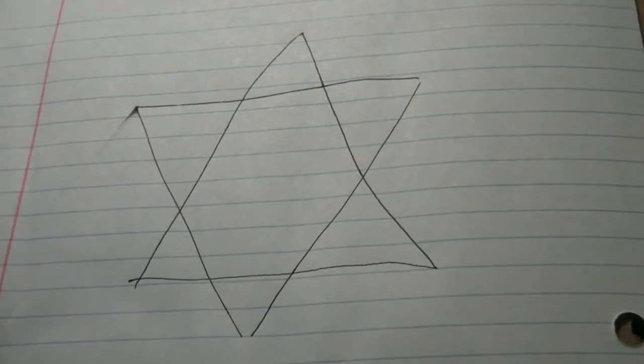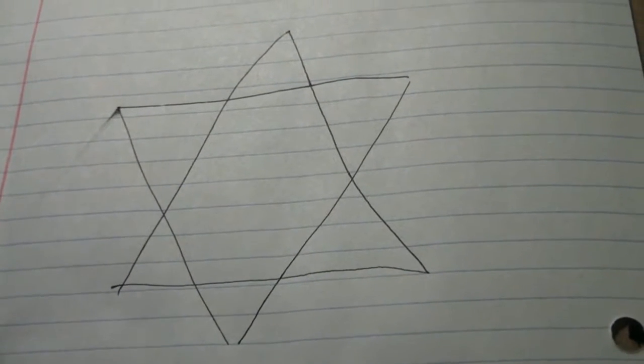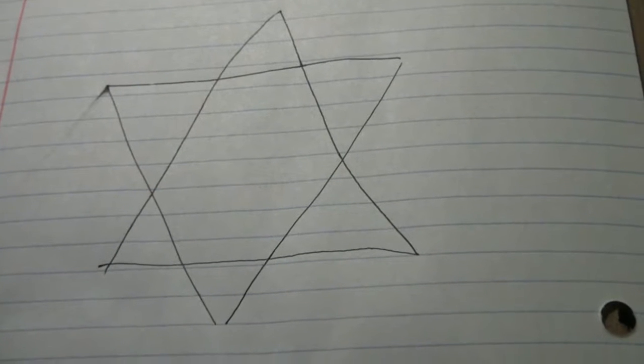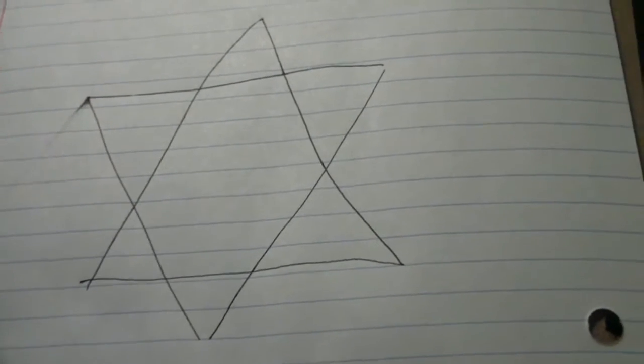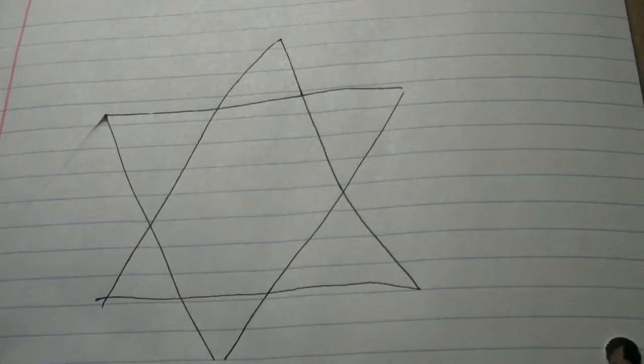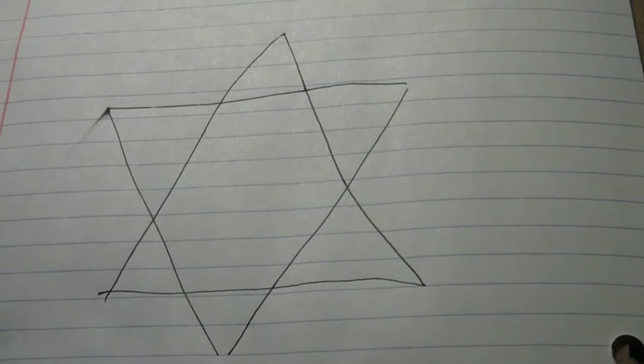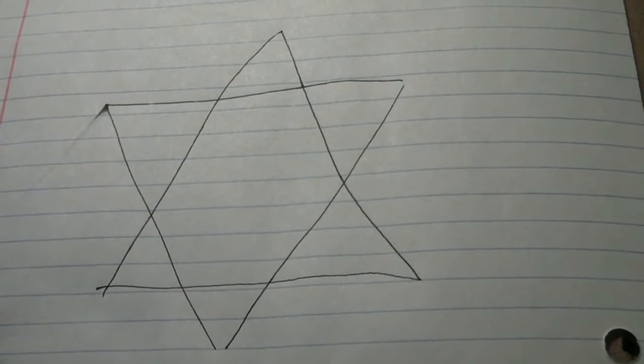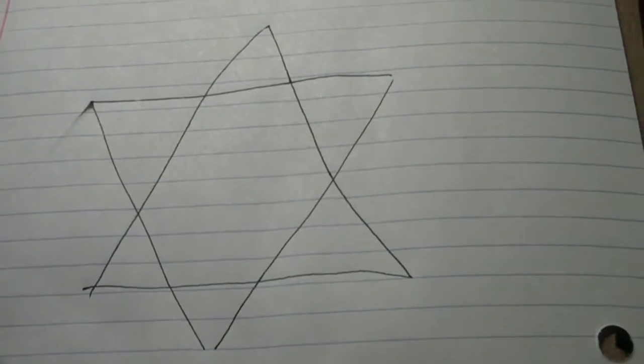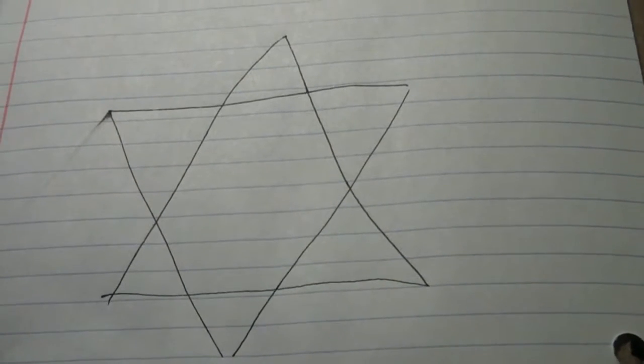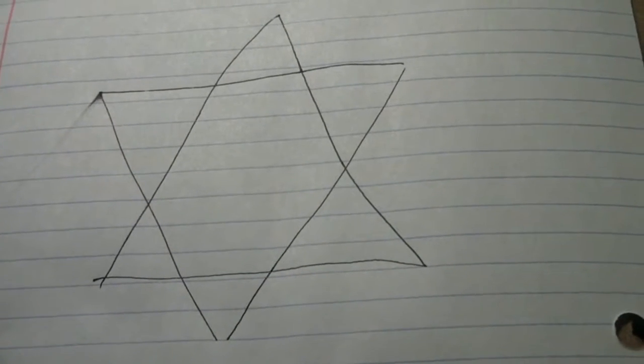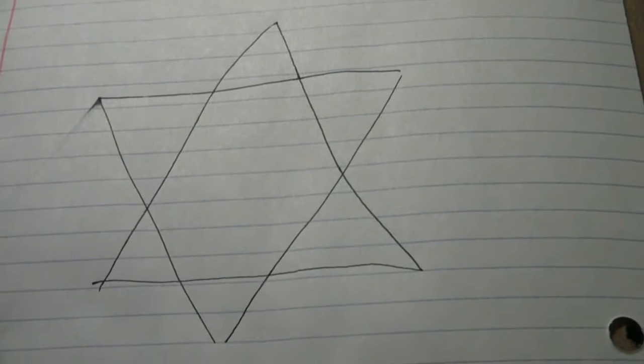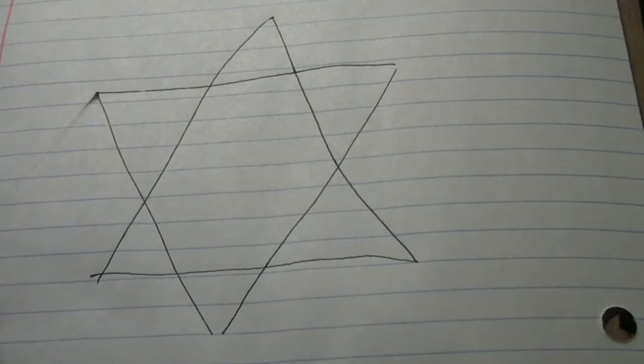This is a symbol that they would use, commonly called the Seal of Solomon or the Star of David. This symbol is actually denoting the combination of earthly perfection or material perfection and spiritual perfection or heavenly perfection.